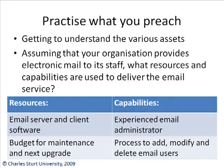Practice what you preach — getting to understand your various assets. Assuming that your organization provides electronic mail to its staff, what resources and capabilities are used to deliver the email service? Some examples of resources: an email server and client software, and of course budget for maintenance and the next big upgrade. For capabilities, you probably need an experienced email administrator and processes in place to add, modify and delete email users. Think about some more examples of resources and capabilities and add to this list.